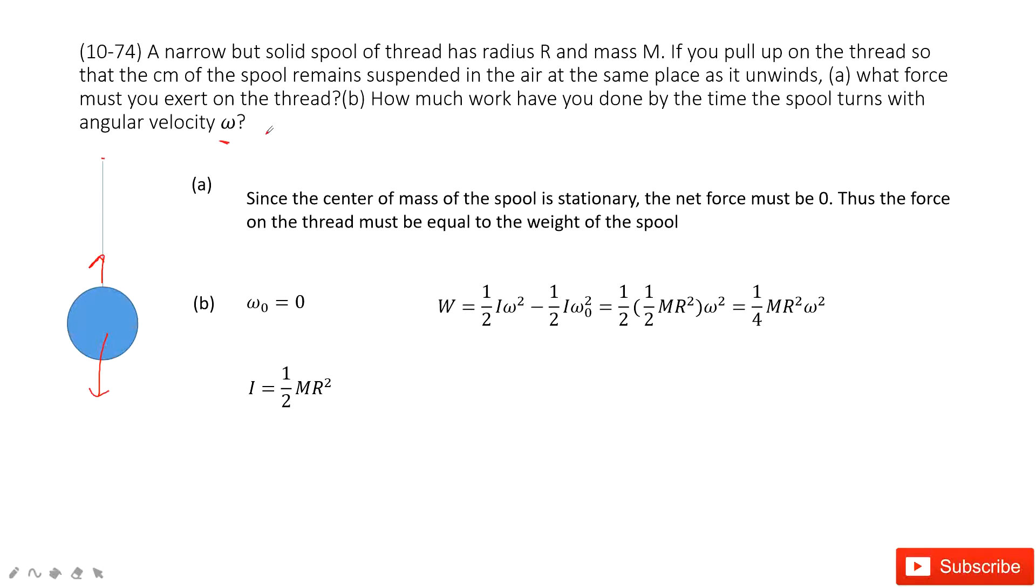How can you find the net work? We can consider the work-energy principle. The net work equals the change of kinetic energy. Initially, it's stationary. Finally, it gets angular velocity omega.